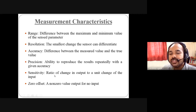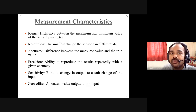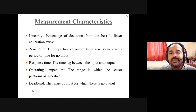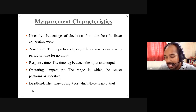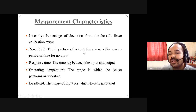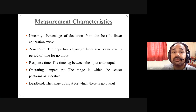Sensitivity is the ratio of change in output to a unit change in input — the sensor should be highly sensitive. Zero offset means a sensor with zero input should give zero output; a non-zero value for no input is undesirable. Linearity refers to the percentage of deviation from the best-fit linear calibration curve — values should be very close to the theoretical behavior or least squares fit. Zero drift is the departure of the output from zero value over a period of time for no input.